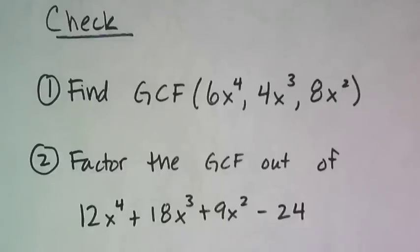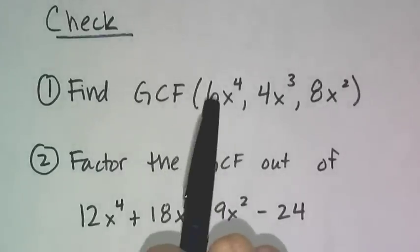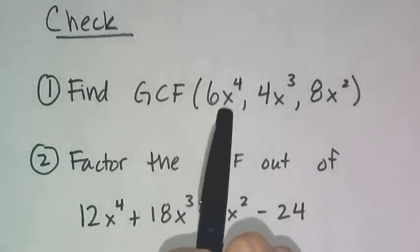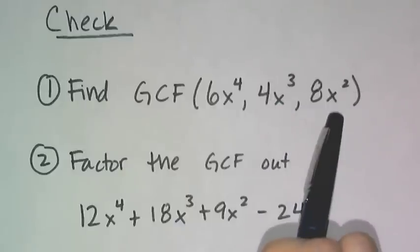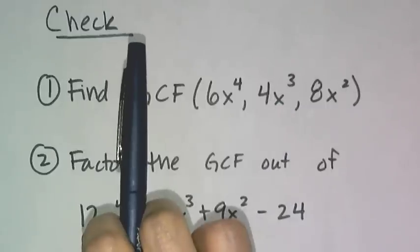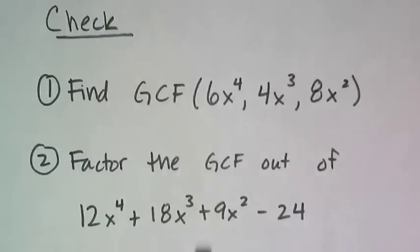Now it's your turn. I want you to start by finding the GCF between these three terms, 6x to the 4th, 4x³, and 8x². And then, I want you to change gears a little bit, and then factor the GCF out of this polynomial, 12x⁴ + 18x³ + 9x² - 24.